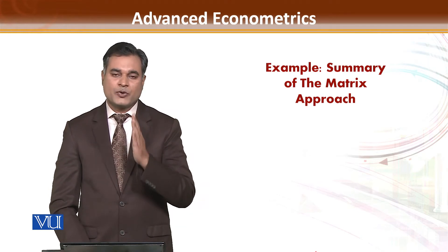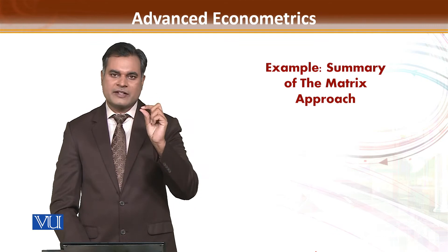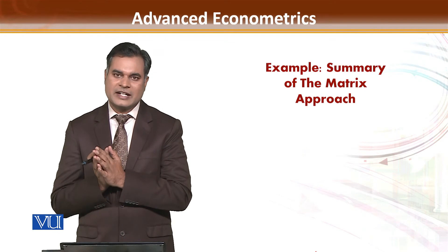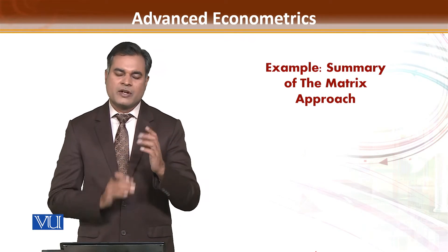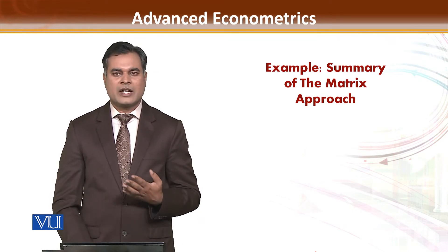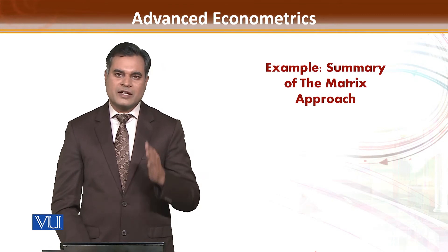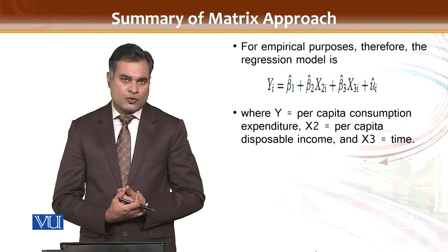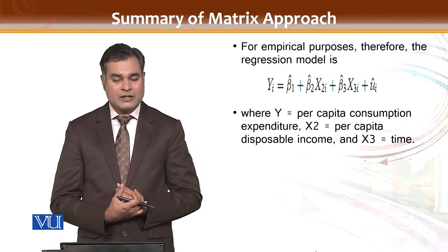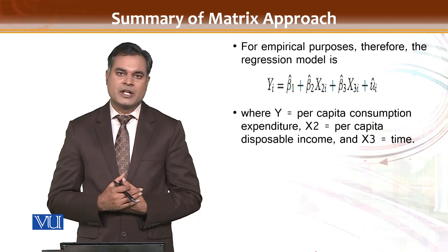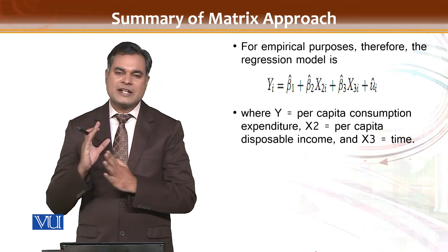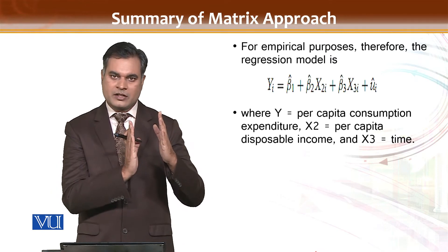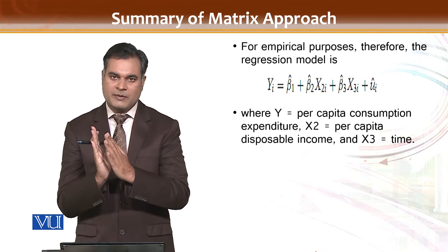When you move from the two-variable to the three-variable case, there is only a minor difference in the estimation technique. Specifically, as we discuss the matrix approach, we have already covered the two-variable case. Now in the three-variable case, y = beta1 + beta2*x1 + beta3*x2 + error term. As you expand to k variables, there will be minor differences in the R-squared and F-statistic formulas.